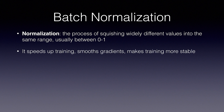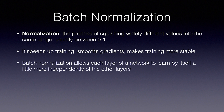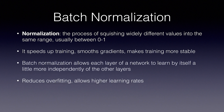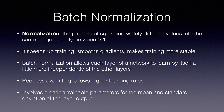If the input layer is benefiting from normalization, why not do the same thing for all the hidden layers? It turns out the benefits are synergistic. Batch Normalization allows each layer of a network to learn by itself a little more independently of the other layers. It also helps reduce overfitting and allows higher learning rates. The details are beyond the scope of this video, but it involves creating trainable parameters for the mean and standard deviation of the values output by the normalization layer. I'll leave a link in the description if you want to learn more.